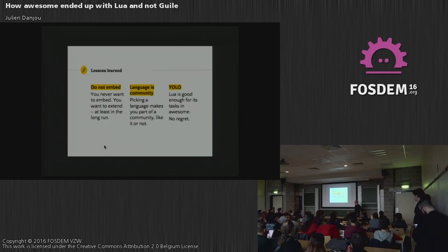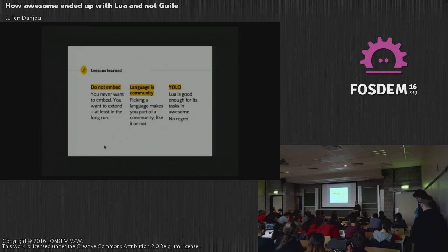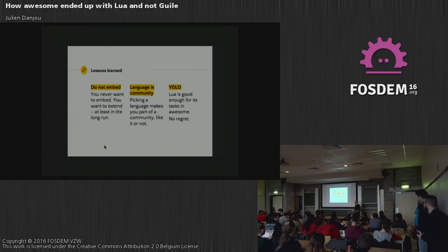A few lessons learned: embedding is good — code size tends to decrease because you do more in your language. Embedding is not a failure. It's like when you can't write from scratch in the language you want — Guile, Lua, whatever — you have to write C and think your program that way. But it's way better to say "I'm going to do everything in Guile or Lua" and write the bindings, even if you usually don't want to because you want to solve your problem, not write bindings.